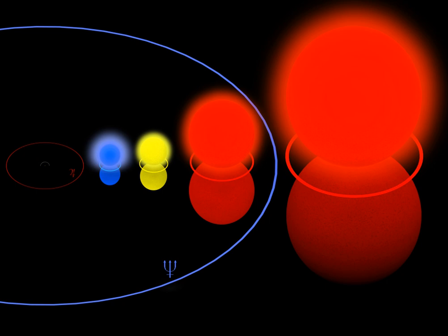This equates to about 2 nonillion kilograms. The Sun's mass is approximately 1.98847 ± 0.00007 × 10^30 kilograms. This is about 332,946 times the mass of Earth, or 1,048 times the mass of Jupiter.